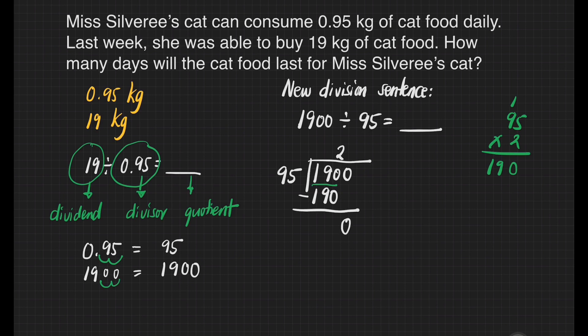Bring down 0. How many 95s are there in 0? That's 0. 0 times 95 is equal to 0. 0 minus 0 is equal to 0. It means our answer is 20. But we have to make sure our answer is correct — we have to check it first.